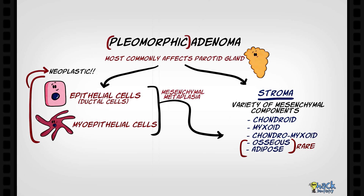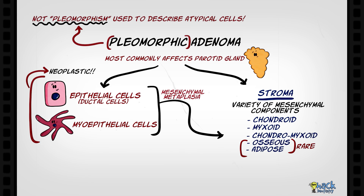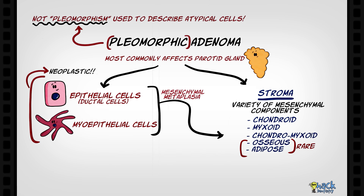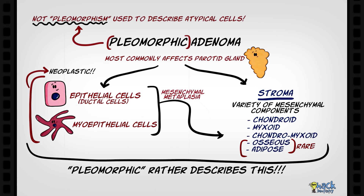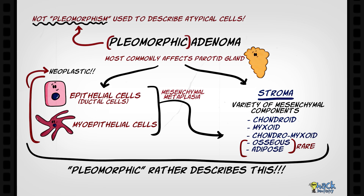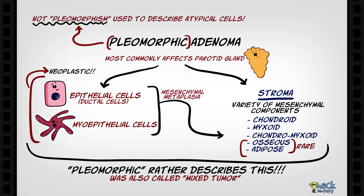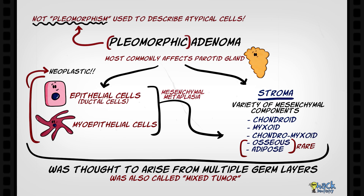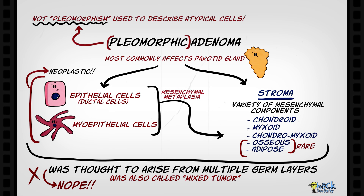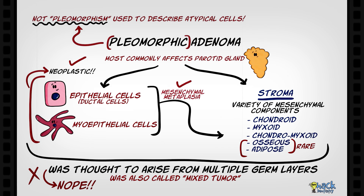The term 'pleomorphic' in pleomorphic adenoma should not be confused with pleomorphism used to describe atypical cells in dysplastic lesions. Pleomorphic in this context describes the mixture of epithelial cells as well as the variety of mesenchymal tissue types under the microscope. This tumor was also referred to as a 'mixed tumor' for the same reason and was thought to arise from multiple germ layers. However, this is not the case, as the varied stromal components are derived as a result of mesenchymal metaplasia of the neoplastically altered myoepithelial and epithelial cells.